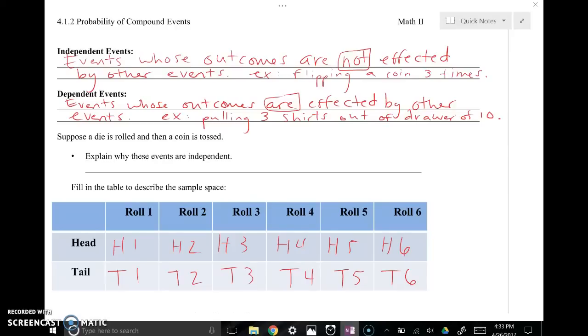That then is in contrast to dependent events. And I'm going to start with the example that I gave, pulling three shirts out of a drawer of ten. So if you're looking for the probability that you'll pull three white shirts in a row out of this drawer of ten, you are affected by what you pull out the first draw, the second draw, the third draw.